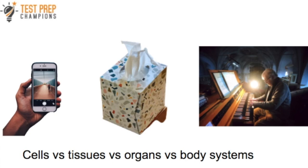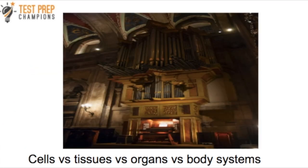When you hear the word organ, think about picturing an actual organ. You can see that clearly an organ is bigger than a tissue box or a cell phone. So that's how you'll remember that organs are bigger than tissues and cells. Just remember that body systems are groups of organs — rather than just showing one simple organ, we see a whole system. So hopefully that'll help you remember that body systems are the biggest.